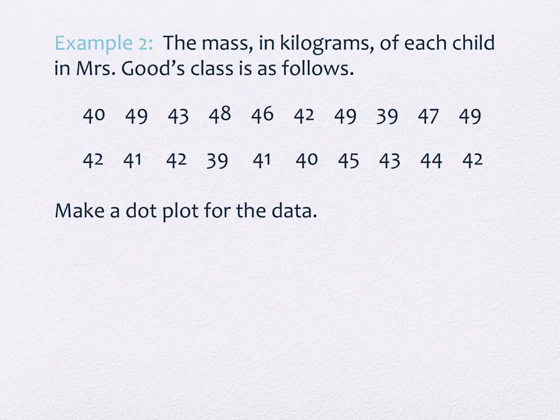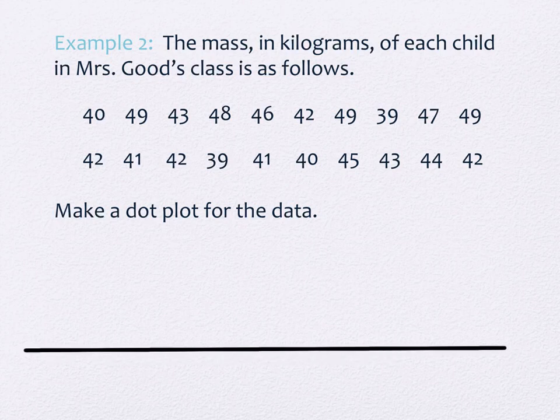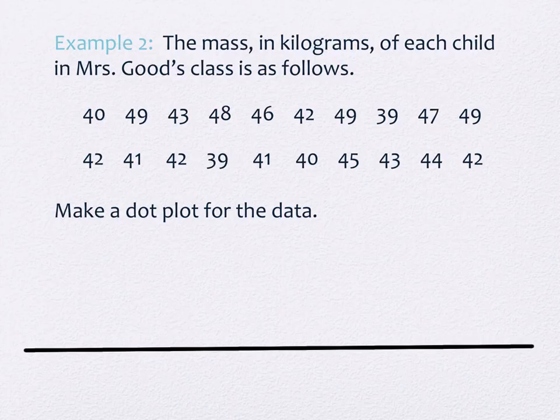The mass in kilograms of each child in Mrs. Good's class is given — it says make a dot plot for the data. A dot plot uses a horizontal line like a number line: the smallest value on the left, the biggest on the right. We need to figure out those values from the data set. What's the smallest value?